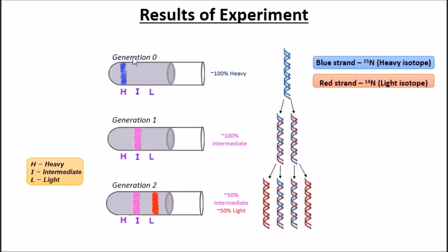Generation 0 shows nearly 100% of the sample is marked with N15. Generation 1 shows the results of N15 strands mixed with N14 strands, which results in an intermediate. Generation 2 contained approximately half of the strands containing only the N14 light isotope strands and half mixed with the N15 and N14 strands.